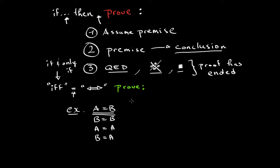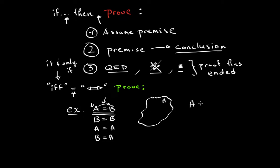What I want to say is that if there is some sort of equality, you are saying that one is another representation of the other. Now, if you draw some random set A, we know that A is a subset of itself.